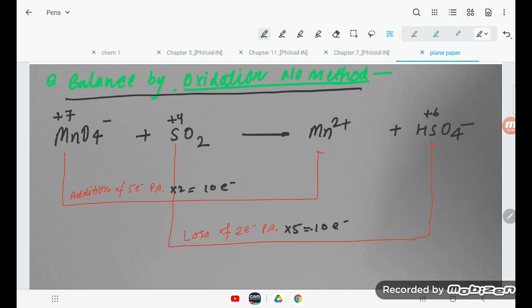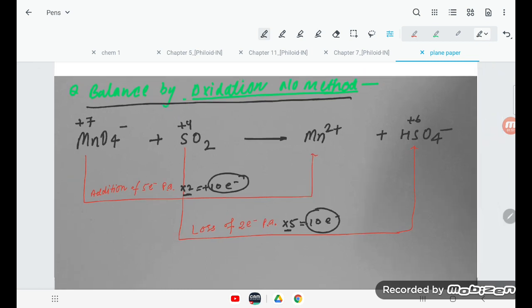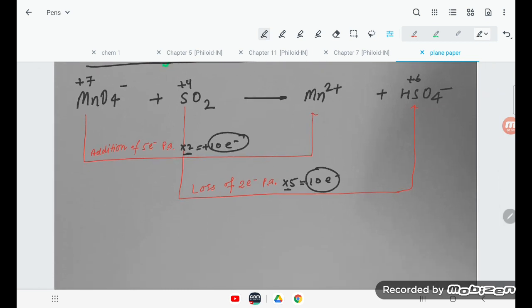Both charges are equal here - 10 electrons here, 10 electrons there. But how do they become equal? By multiplying 2 and by multiplying 5. So first you multiply and then write.